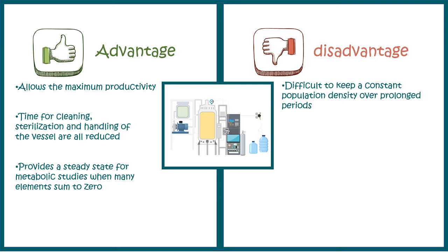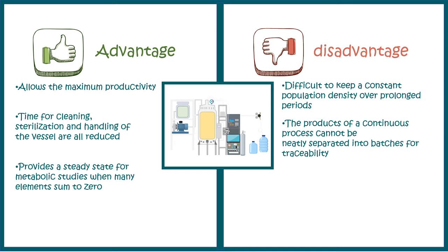Though theoretically it looks very advantageous, the difficulty is to keep a constant population of viable cells, which is practically challenging. Additionally, the products of a continuous process cannot be neatly separated into batches, so traceability is difficult — if the whole run is defective, you have to discard a large amount of product. There is also an increased risk of contamination because you are injecting and withdrawing media and products sequentially over time.